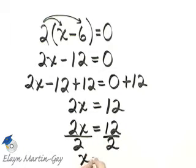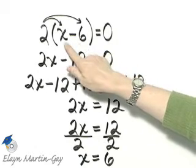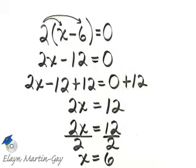The left side simplifies to x. The right side, 12 divided by 2, is 6. So the solution is 6. You can check by replacing x with 6 in the original equation and seeing that a true statement results.